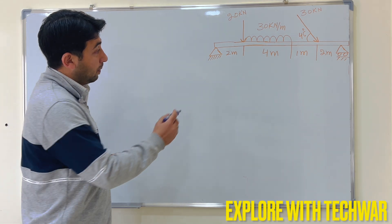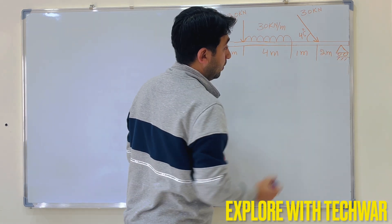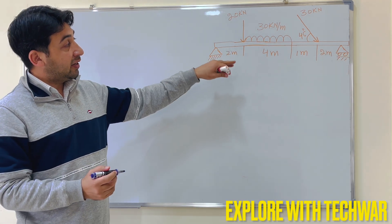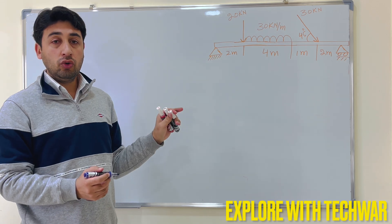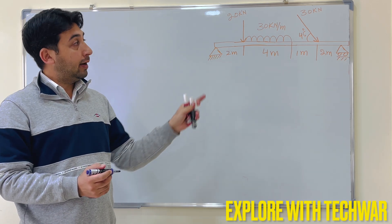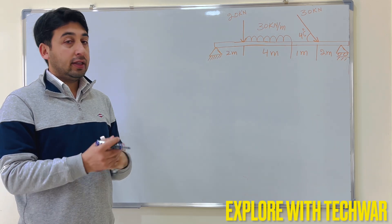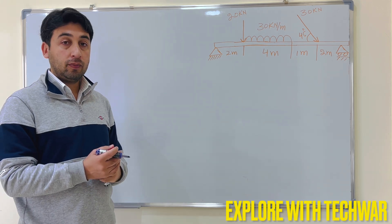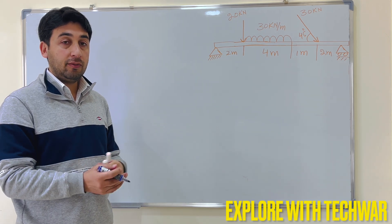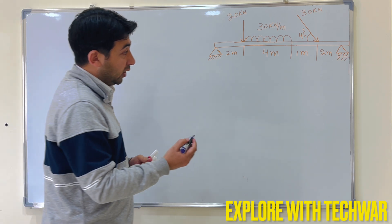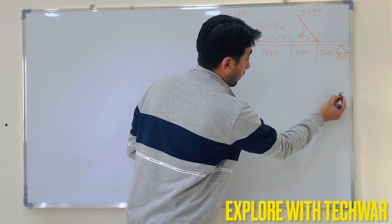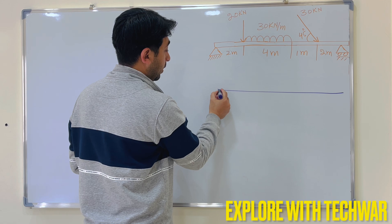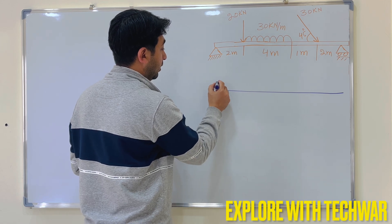We have two supports: a pin support and a roller support, as it is a simply supported beam. I will redraw the figure, converting the UDL into a point load and finding the horizontal and vertical components for the axial force, then it will be easy for us to solve.